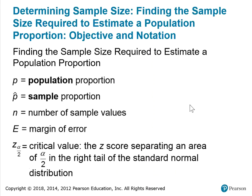Determining sample size — specifically, finding the sample size required to estimate a population proportion. The key notation: P is the population proportion, P-hat is the sample proportion, N is the number of sample values, E is the margin of error, and Z sub alpha over 2 is the critical value — the Z score separating an area of alpha over 2 in the right tail of the standard normal distribution.